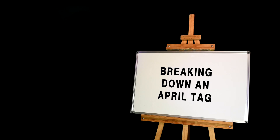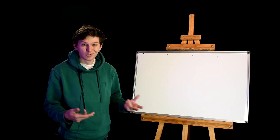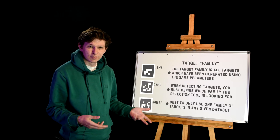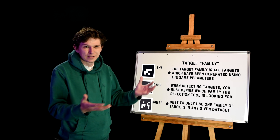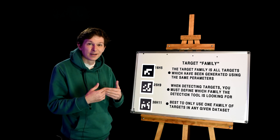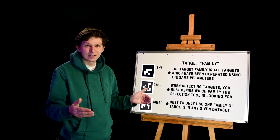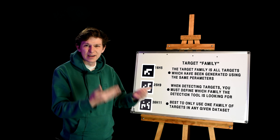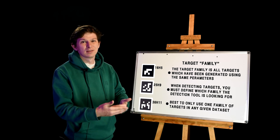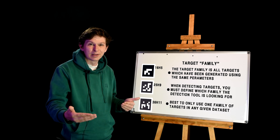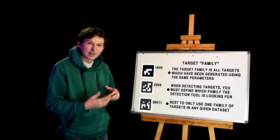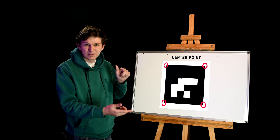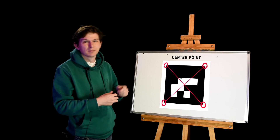April tags are supported by almost everything, and the April tag ecosystem is available on a BSD license, so you can use it commercially. There are three key features with April tags that you should know about — this largely applies also to circular targets, but there are some differences. First is the target family. A target family is all targets of a given type, made using an algorithm to generate. To detect these targets, we need to define what target family we are detecting, so you can only really use one target family within a data set. The April tag also has a known center point, defined by the outer four corners of the black square and finding the intersection point between those four corners.